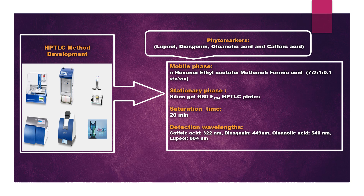The method was developed for simultaneous estimation of lupeol, diosgenin, oleanolic acid, and caffeic acid in Panna Vira Ladi Basma formulation. Silica gel G60 F254 was used as the stationary phase.